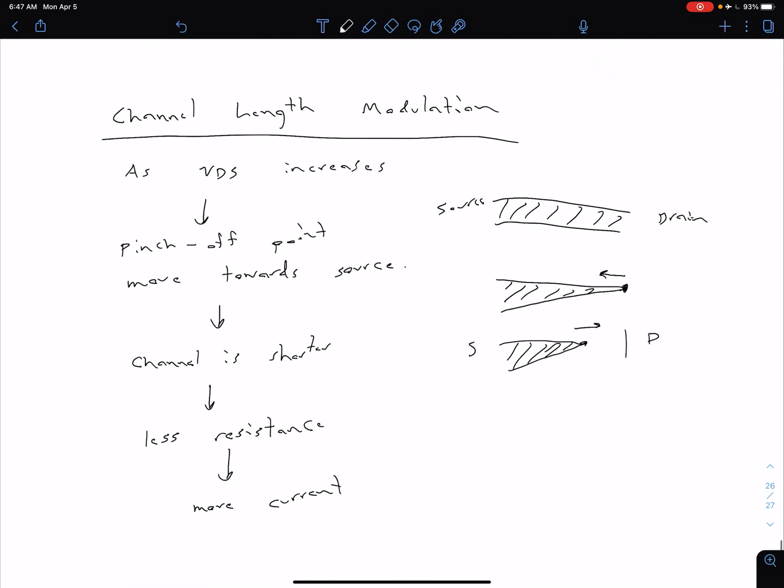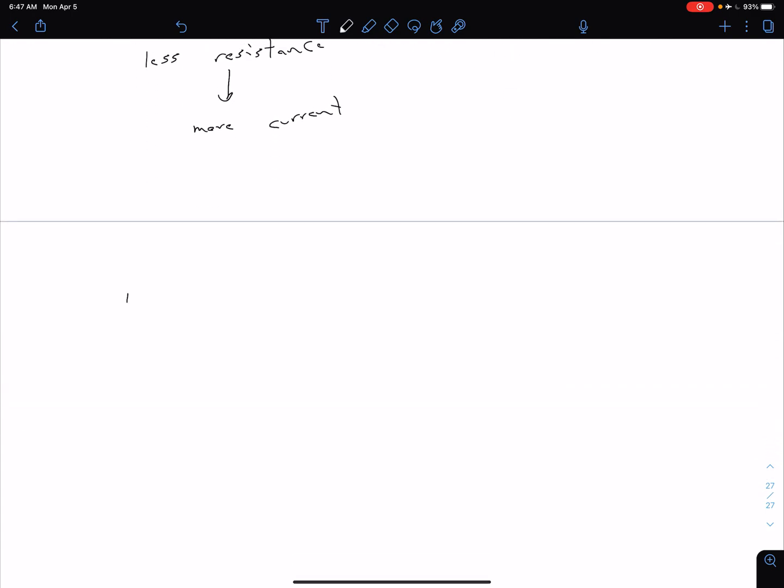Let's go ahead and write an updated equation. Our ID, we had said previously, was equal to our conduction parameter KN times the quantity of VGS minus VTN squared. Of course, that is for our NMOS device. We're going to update that equation by multiplying this by a factor of 1 plus lambda VDS. This is going to be our updated equation for ID. Again, this is in the saturation region. It's not if we're in our non-saturation or our triode region. This is just for saturation.